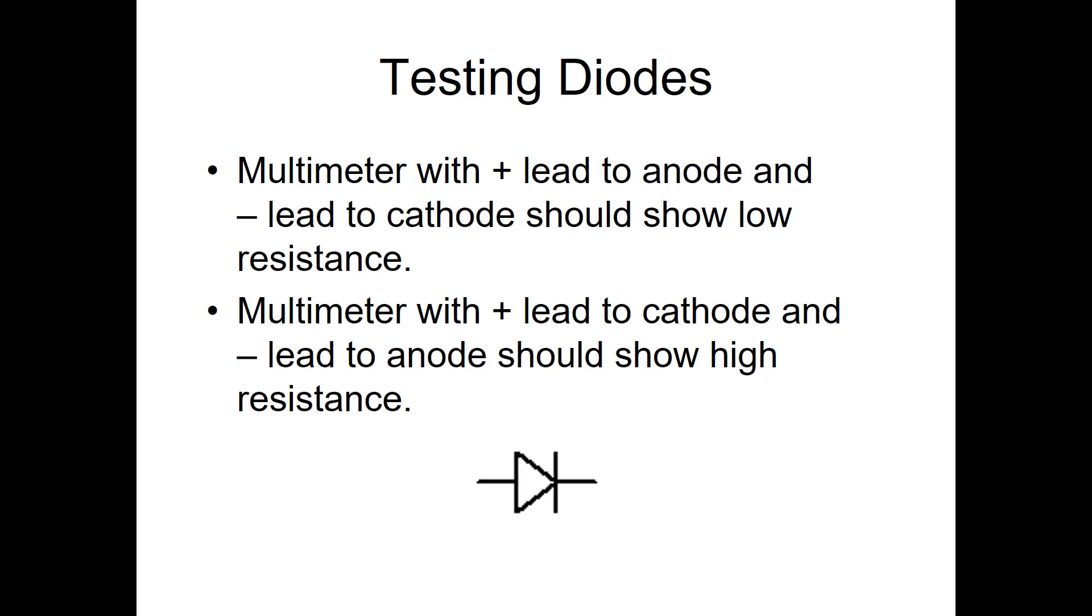To test a diode, you can hook a multimeter up with a positive lead to the anode and a negative lead to the cathode, and it should show a very low resistance. If you connect it backwards with a positive lead to the cathode and a negative lead to the anode, it should show a very high resistance if the diode is still good.